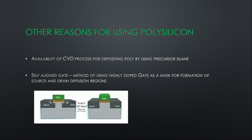There are several other reasons why polysilicon is used as gate material. Low pressure chemical vapor deposition (LPCVD) was available during fabrication for depositing polysilicon using the precursor silane — actually disilane. Another important reason is the self-aligned gate process. This is a method of using a highly doped gate, usually a refractory material, as a mask for formation of source and drain diffusion regions. The older technique used aluminum, requiring careful alignment.